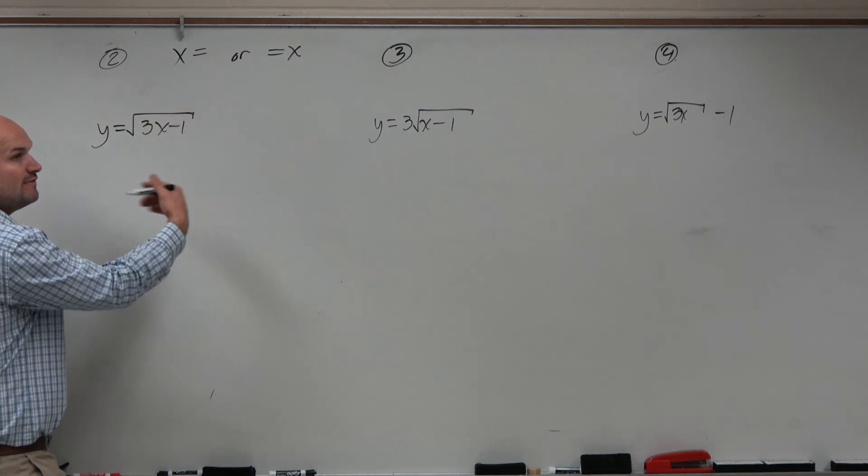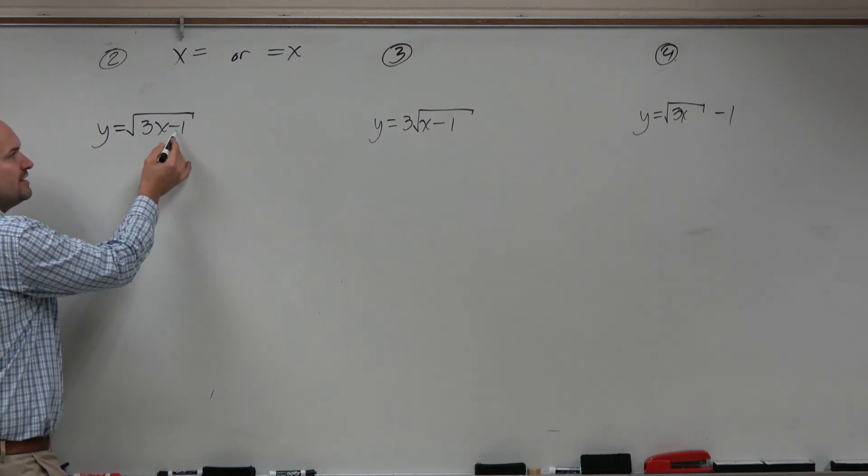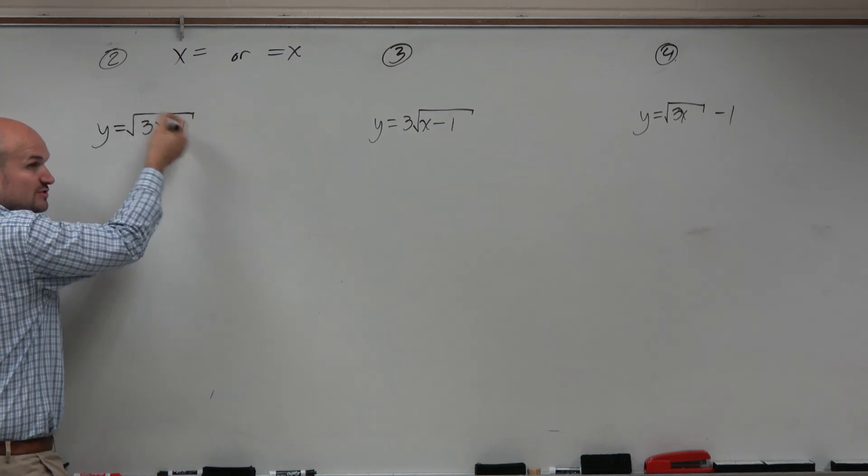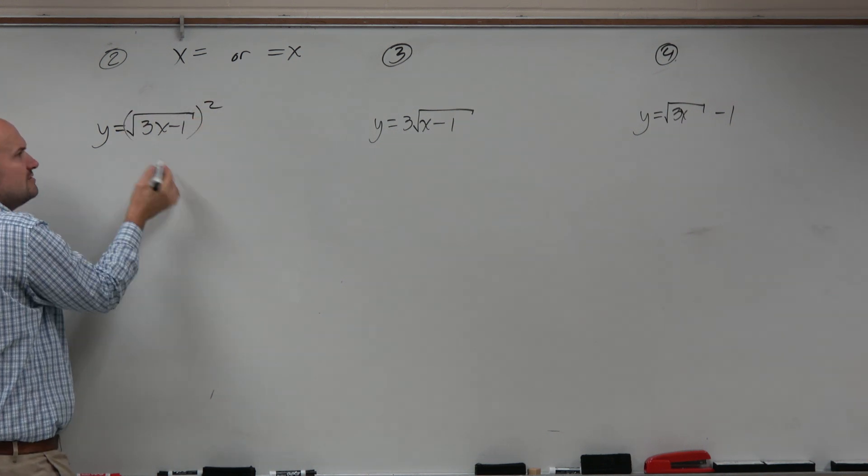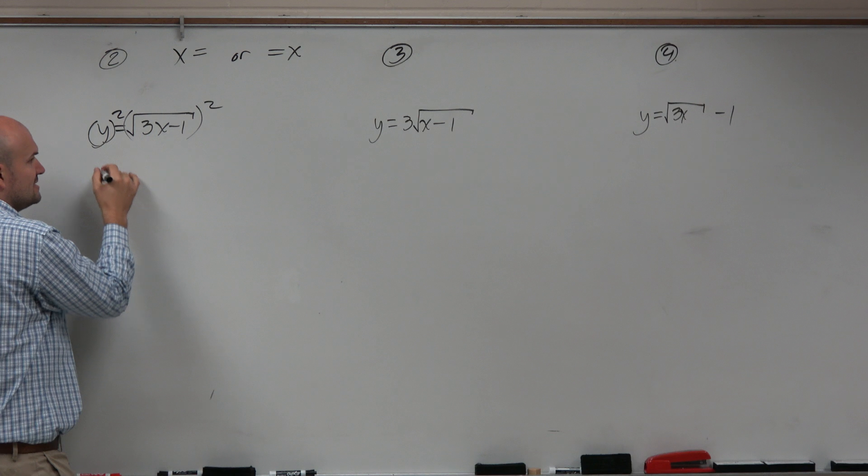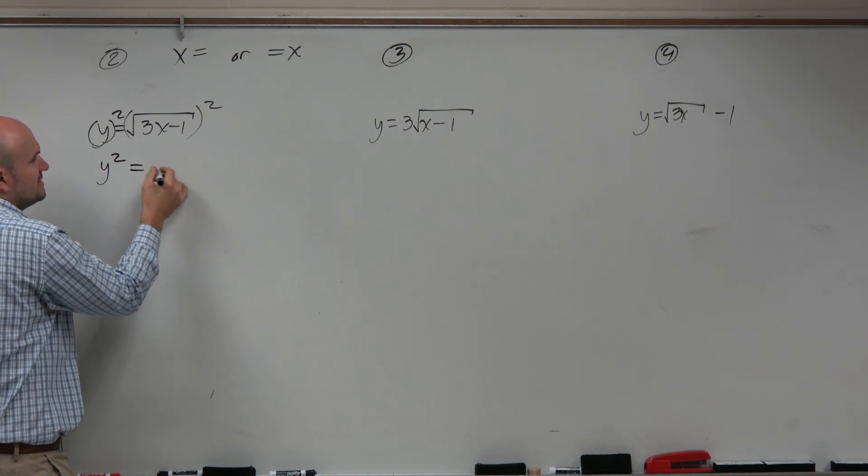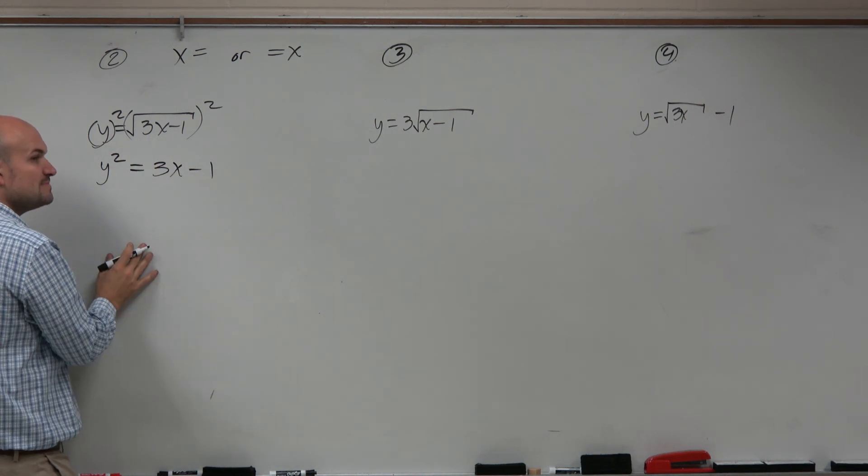But again, we can't use our reverse order of operations. We can't undo the addition and the multiplication because it's under this radical. So we've got to get rid of the radical. To do that, we're just going to square, and make sure you square both sides. So in this case, we get y squared is equal to 3x minus 1.